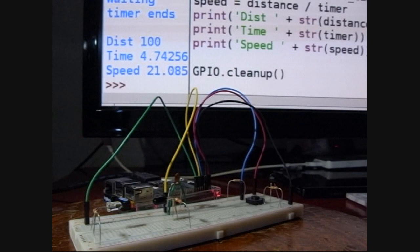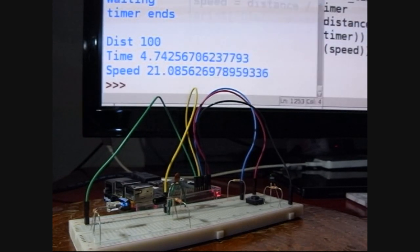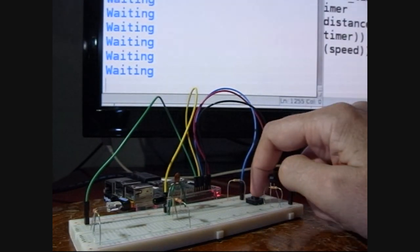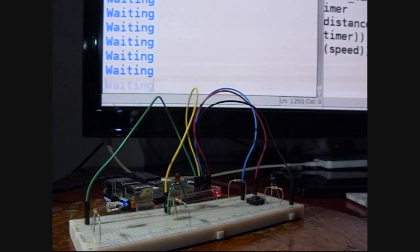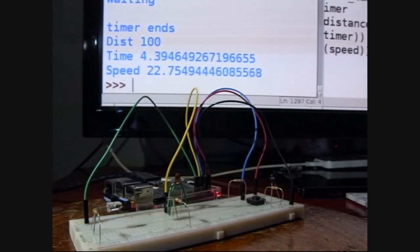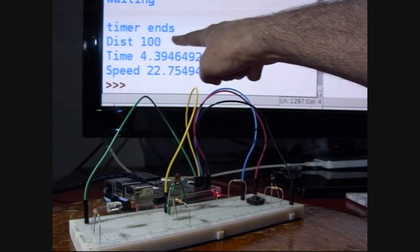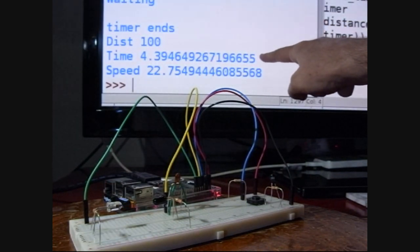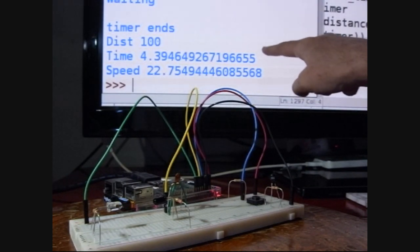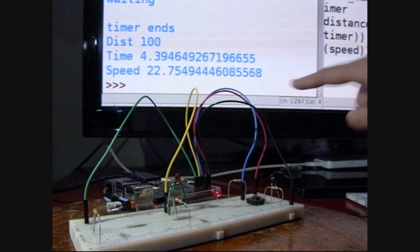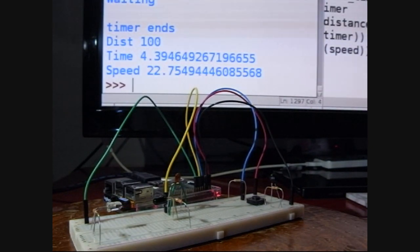So let's see how this works. Let's run our program. Run module. OK, it is waiting for input. Let's start our race. Timer starts on this side and here somebody is going to cross the finish line. And boom, it stops. So we have timer ends. The distance is 100 meters which I entered into the program earlier. The time was 4.3946 seconds. And in order to cover 100 meters in that time you would have to be moving at about 22.755 meters per second. So that is alright.